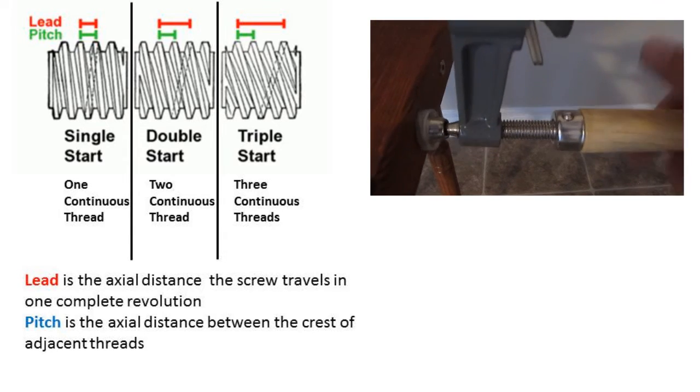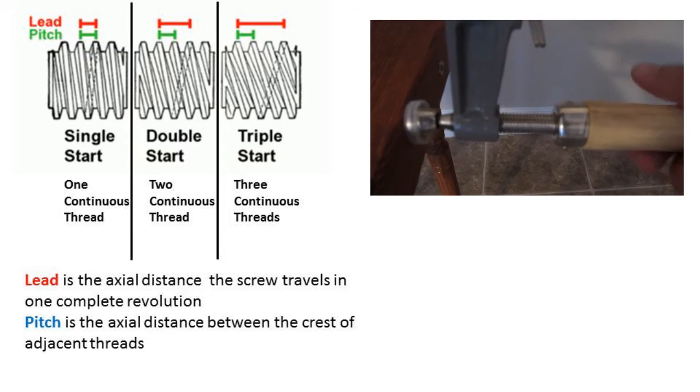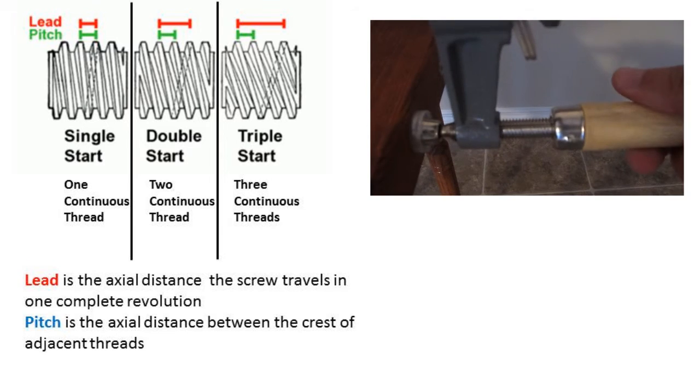For a double start thread, or two continuous threads, it is the distance between every two thread peaks. And finally for the triple start thread, three continuous threads, every third thread peak is the lead distance.